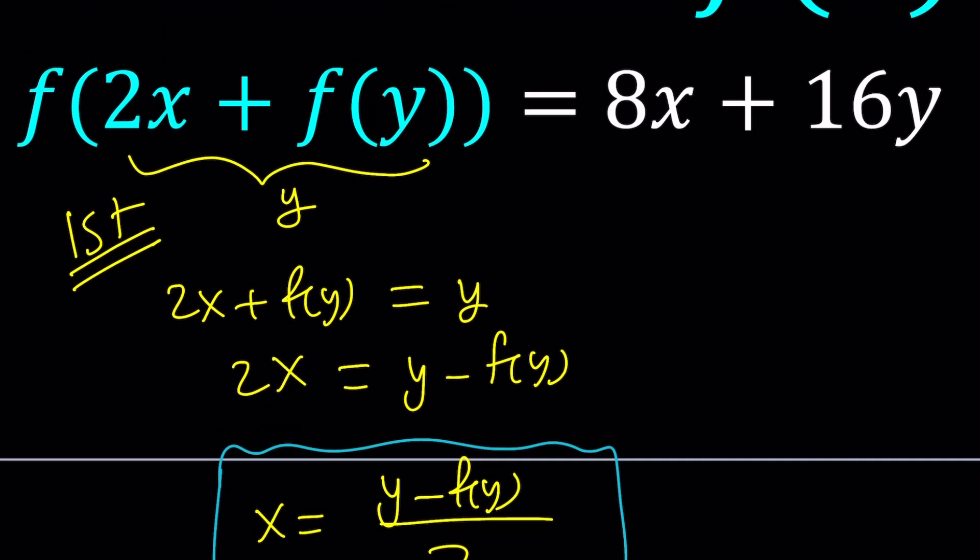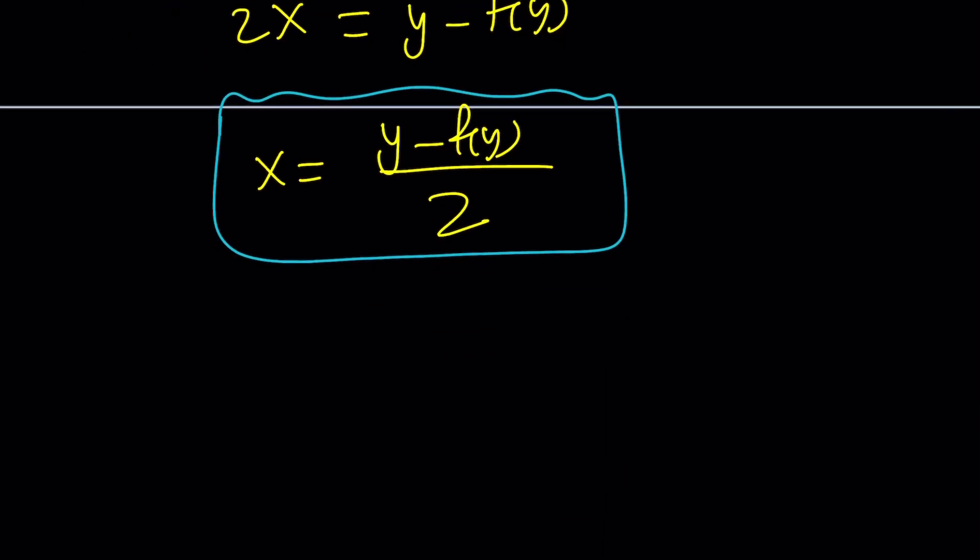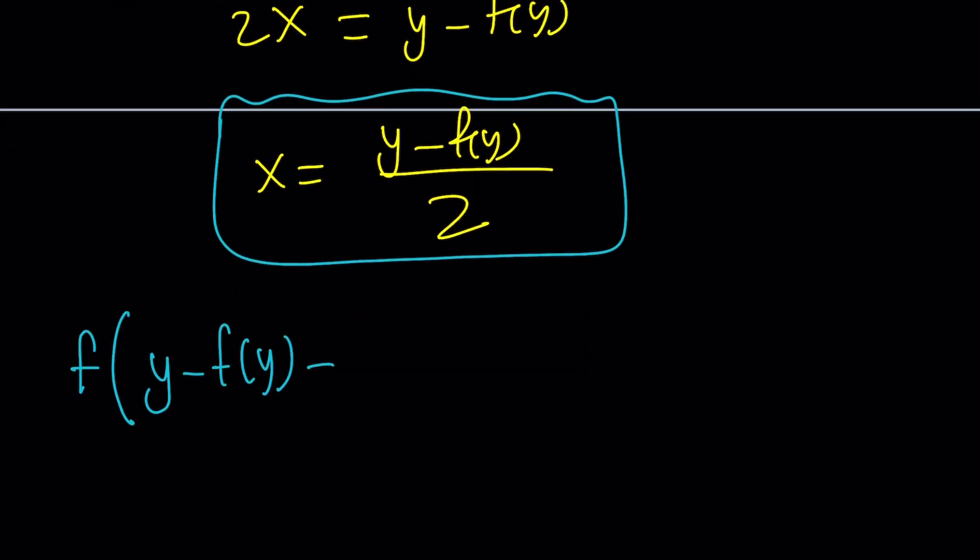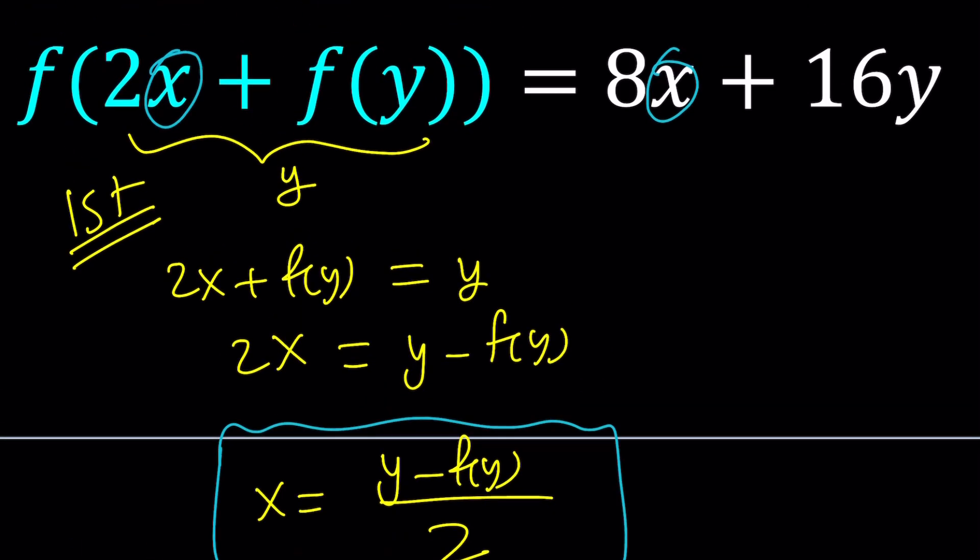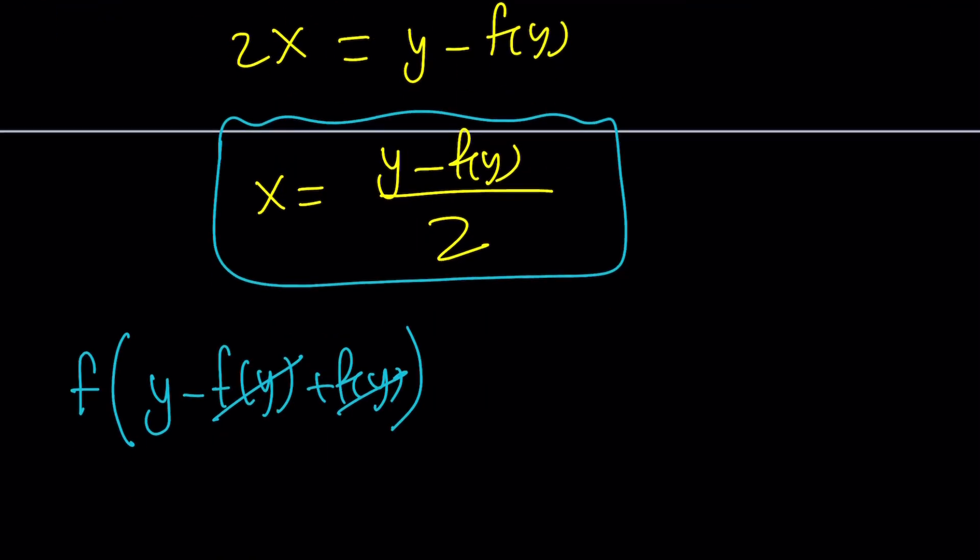Let's go ahead and replace x with that on both sides. Remember, we're only replacing x with something, so y is going to stay the same. So, f of 2x, obviously, when you multiply this by that, you're going to get y minus f of y plus f of y. Actually, this kind of verifies what we're going to get on the left. Yes, we do get f of y because, remember, we had set the whole thing inside the parentheses equal to y.